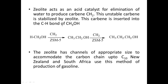For example, HCH2OH using zeolite gives CH3CH2OH, and the chain can be further extended using zeolite as an acid catalyst. The zeolite has channels of appropriate size to accommodate carbon chains up to C10. New Zealand and South Africa use this method of production of gasoline.